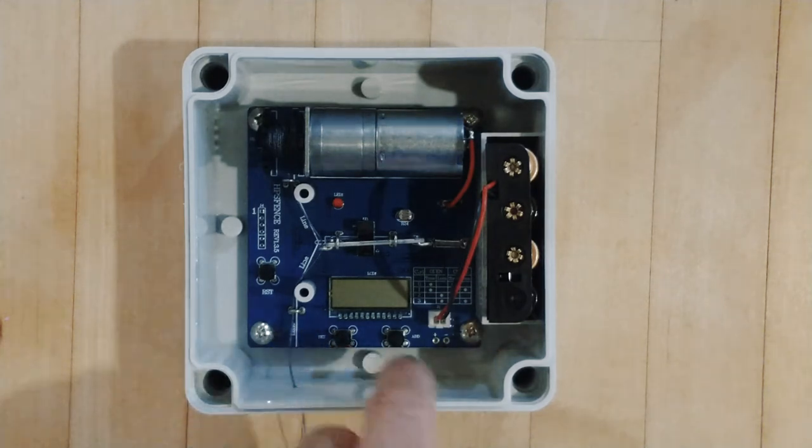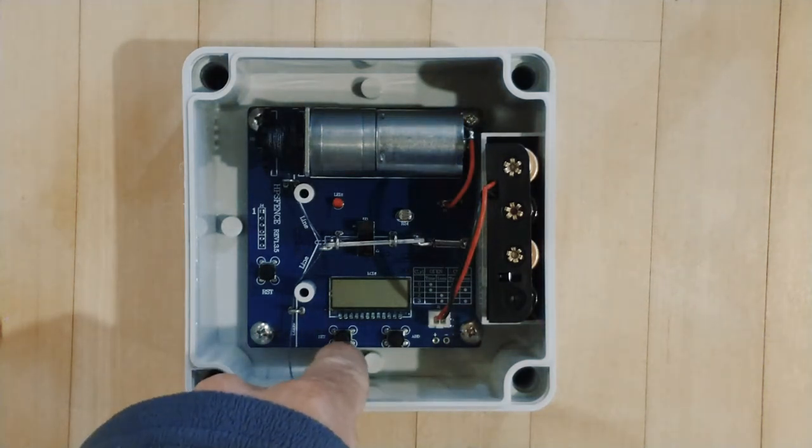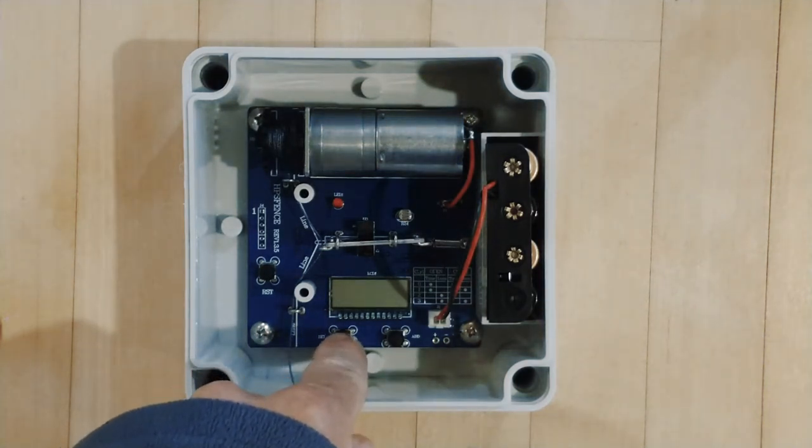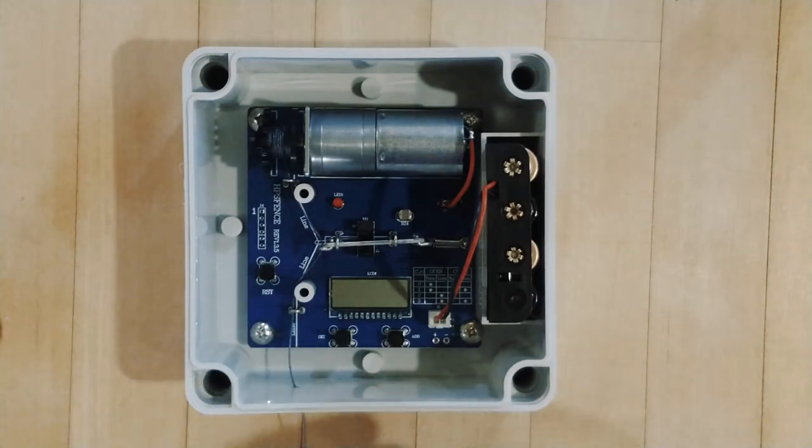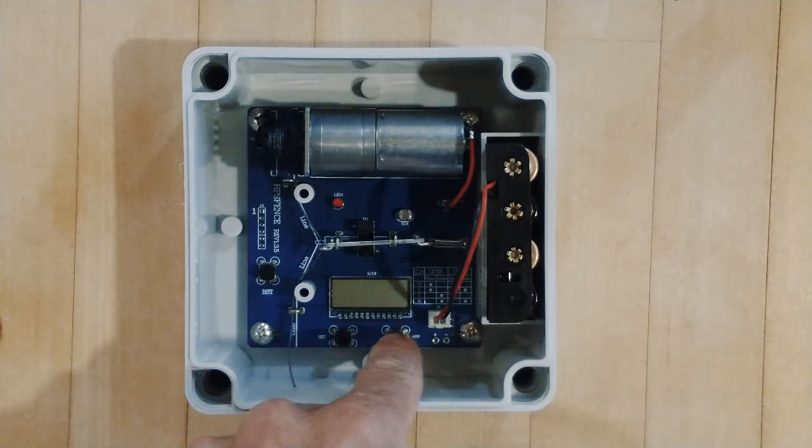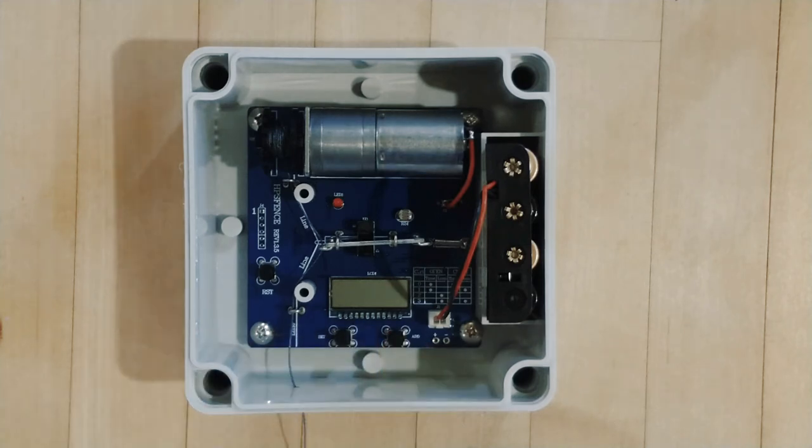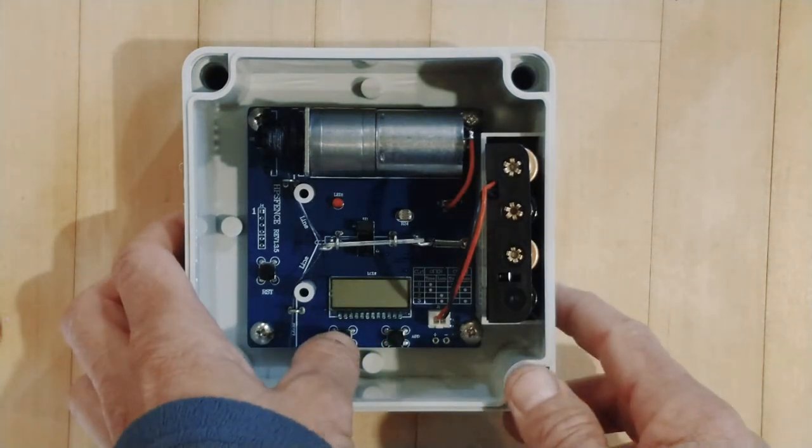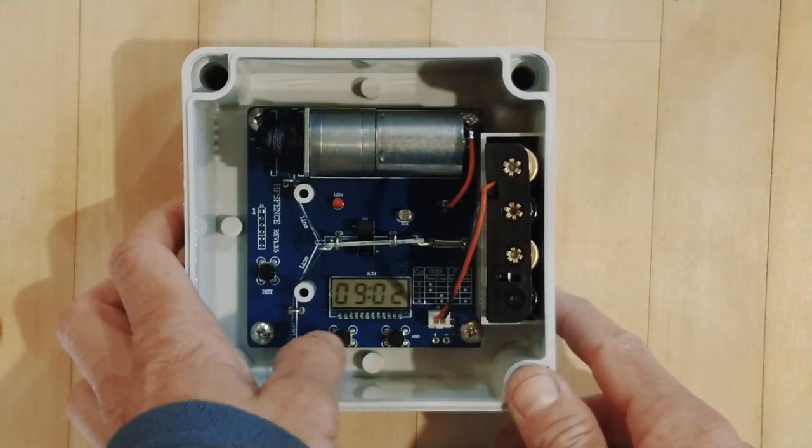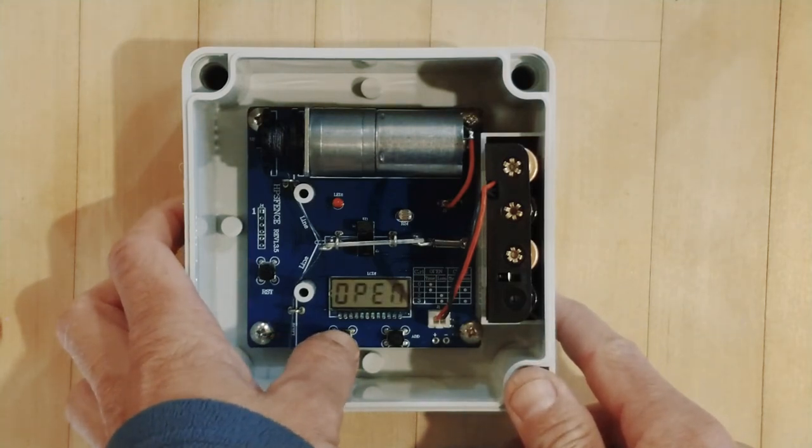So this is the set button. It's the left button we refer to in the instructions. And this is the right button. Set button will scroll you through each new menu item, that's how you advance through the menu. And the add button on the right will actually increment those values. So let's wake the controller up, push it, it comes up. Now we're going to push it again.